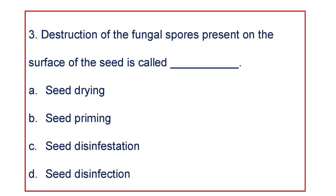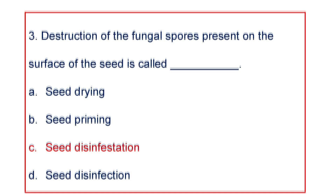Next question: Destruction of the fungal spores present on the surface of the seed is called A. Seed drying, B. Seed priming, C. Seed disinfestation, or D. Seed disinfection. The answer is C. Disinfestation.